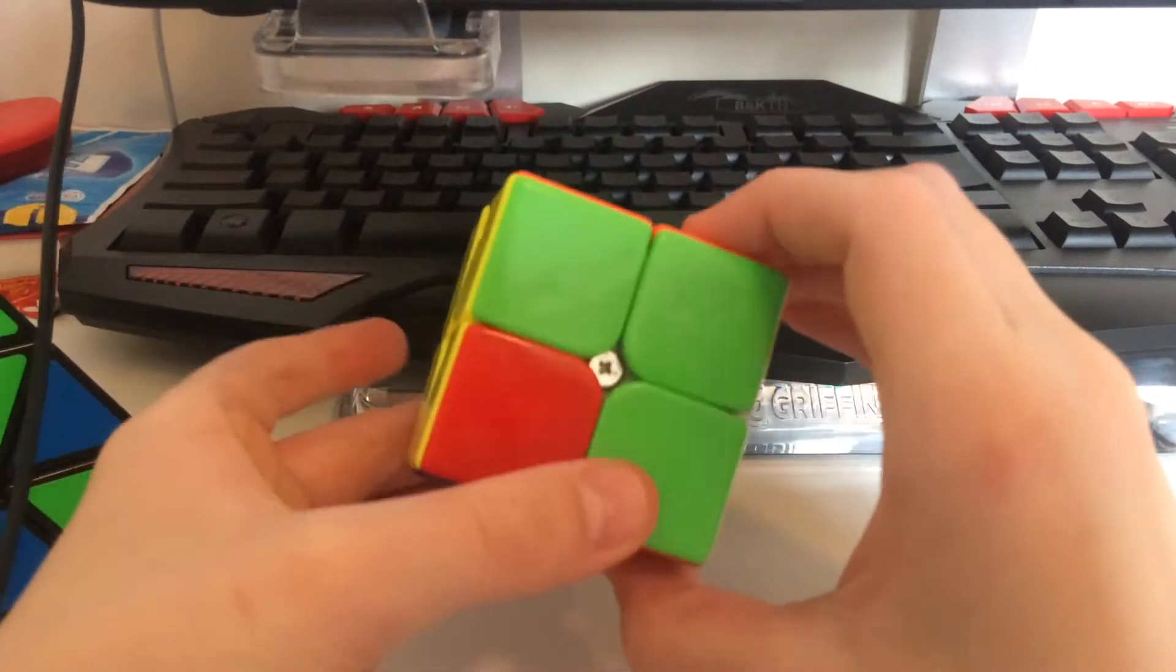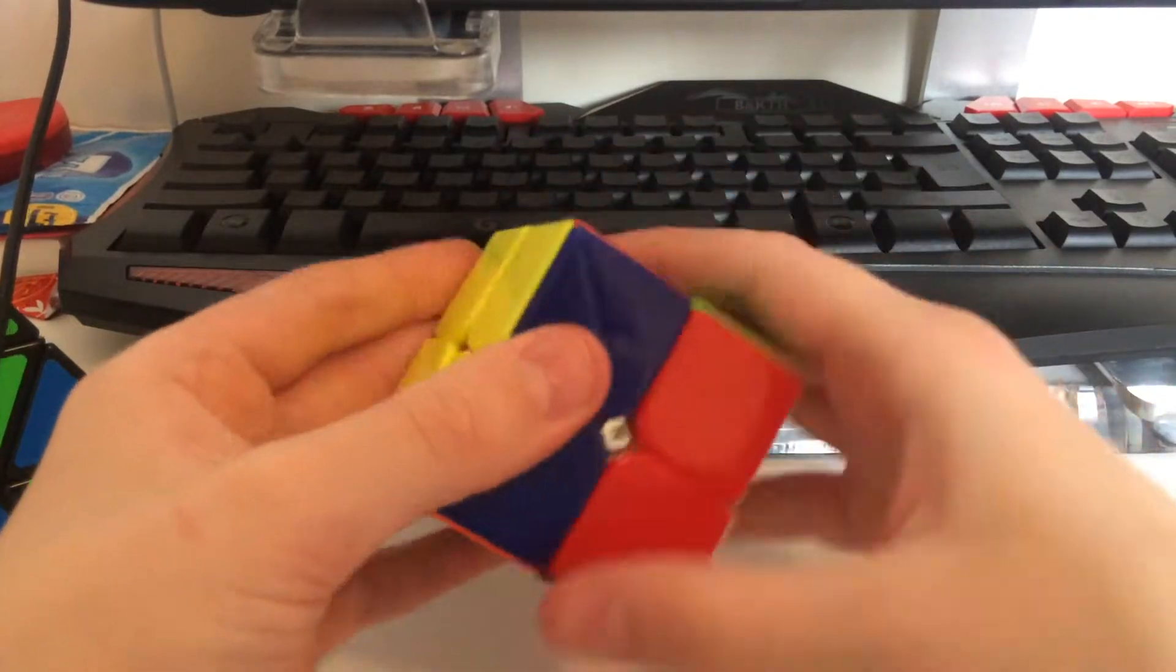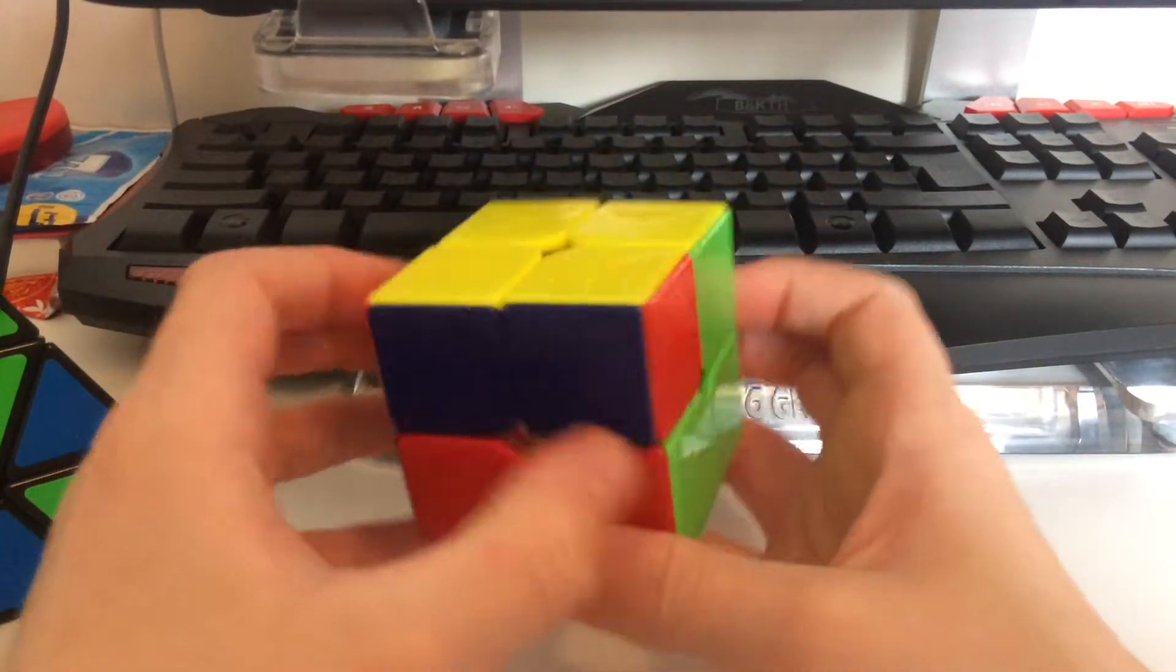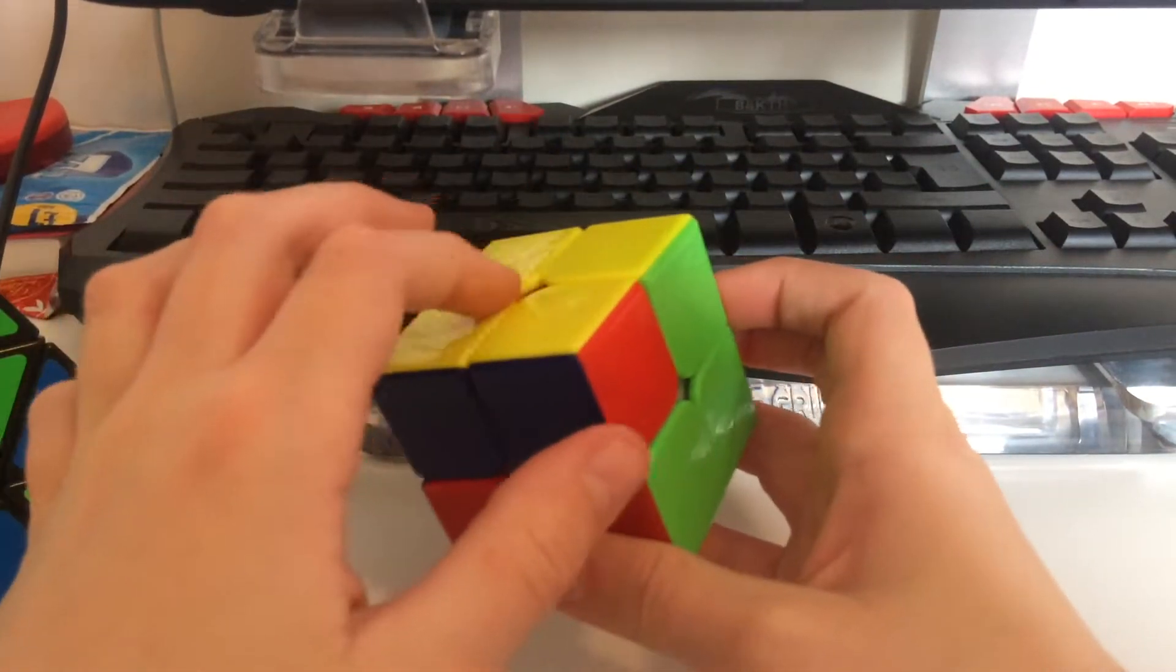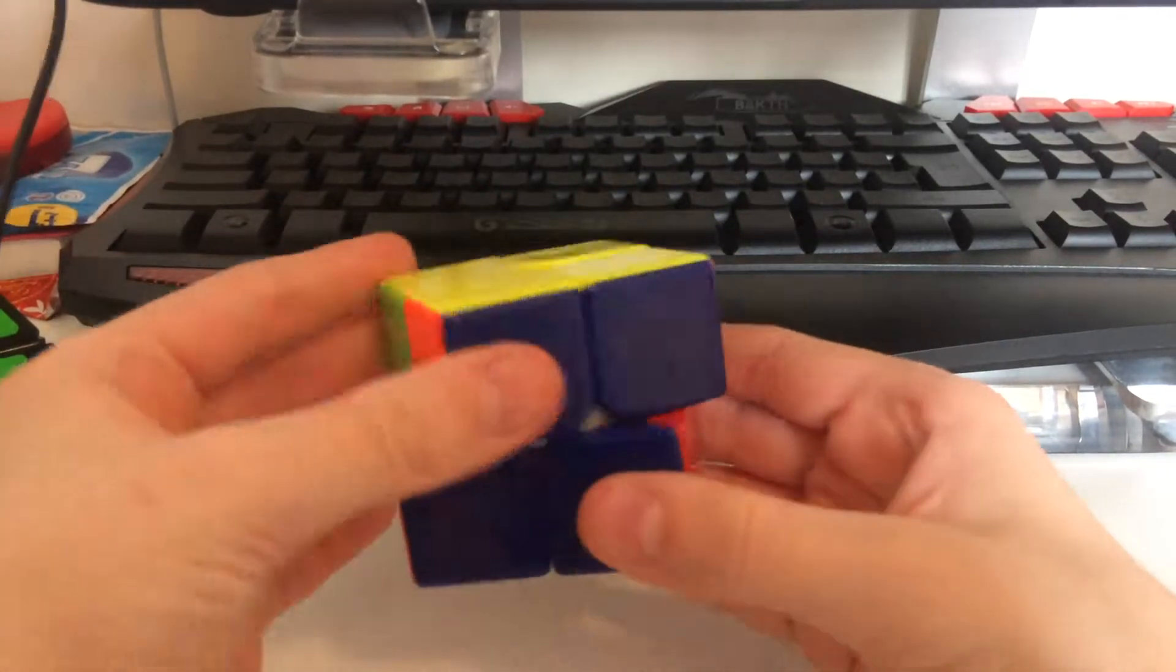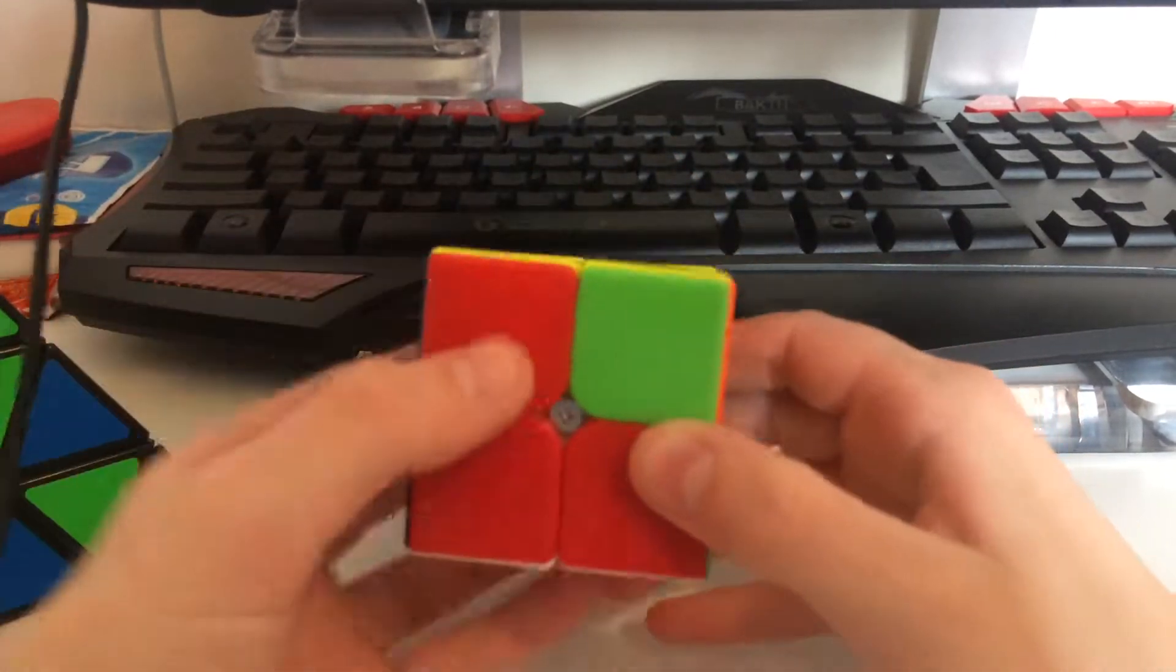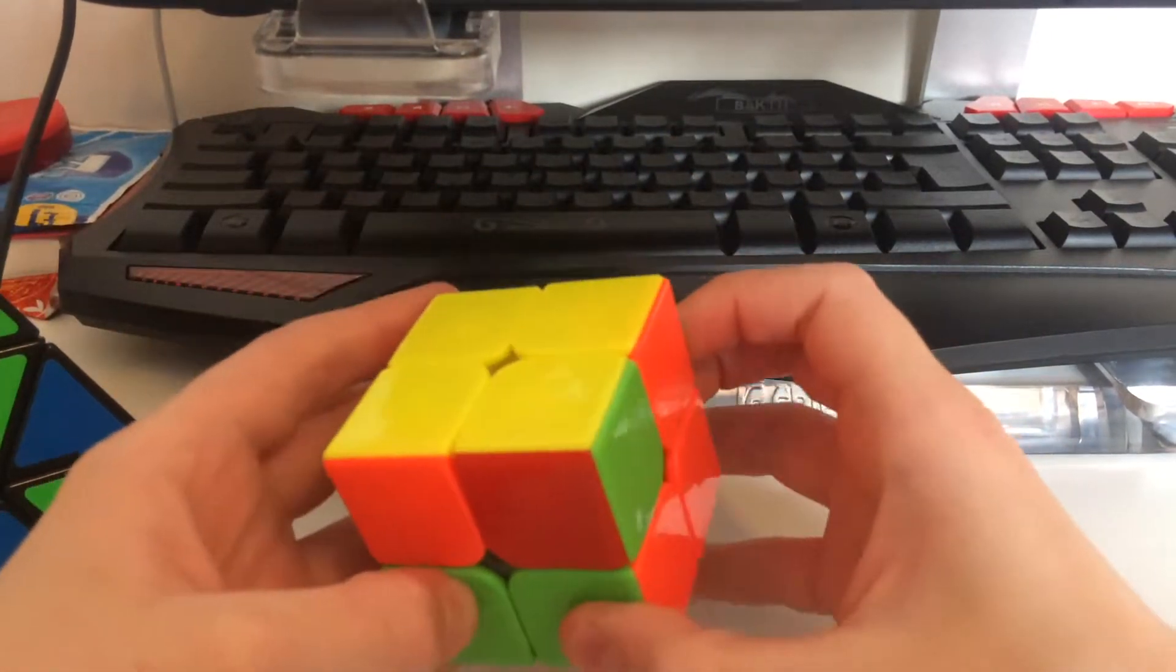I'll show you the first case that you could have, which is when you have two corners, two pieces match like this. The whole yellow side is completed, and you need two pieces match like this. Then just match it with the side, and then you've got those two matched as well. And put it to the back.